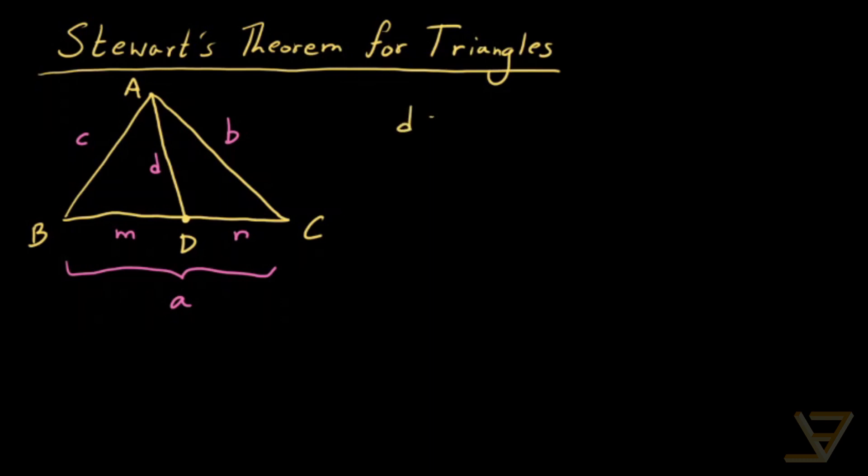And we want to know what d is equal to in terms of a, b, c, m, and n. And interestingly, we can find a formula in terms of radicals. So let's do it.